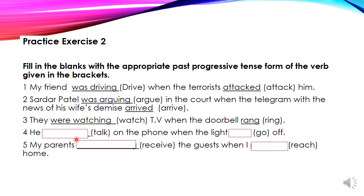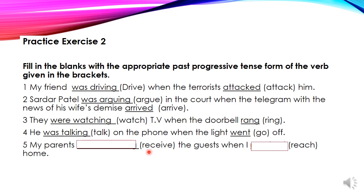Number 4: he dash talk on the phone when the light dash go off. First action is talking on the phone — past progressive: he was talking. Second action — the light went off — simple past. Answer: he was talking on the phone when the light went off. Number 5: my parents dash receive the girls when I dash reach home. Receiving is first action, reaching is second. Parents is plural, so were. Answer: my parents were receiving the girls when I reached home.